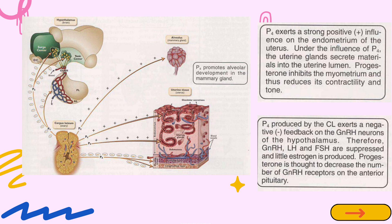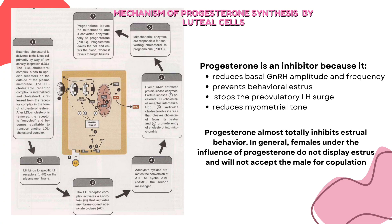P4 promotes alveolar development in the mammary gland. It also exerts a strong positive influence on the endometrium of the uterus. Under the influence of P4, the uterine glands secrete materials into the uterine lumen. Progesterone inhibits the myometrium and thus reduces its contractility and tone. Progesterone almost totally inhibits estrous behavior.